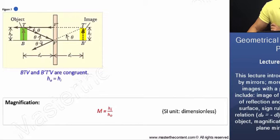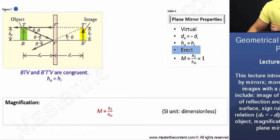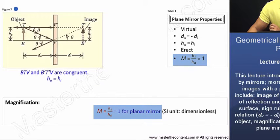For one, since the image arrow and the object arrow point in the same direction, the image is said to be erect. With a plane mirror, the formed image is always erect. And the height of the image and the height of the object have the same magnitude and sign. Therefore, the magnification of a plane mirror is always one.